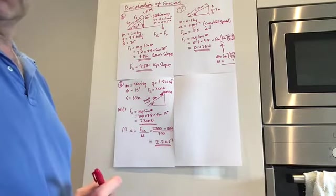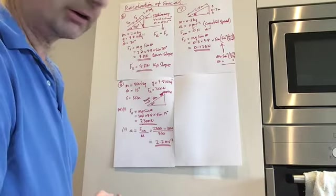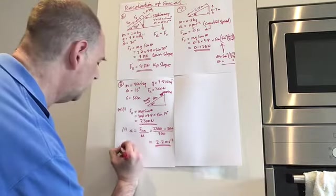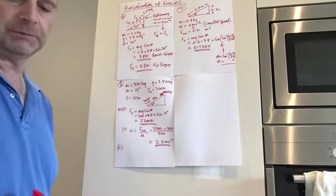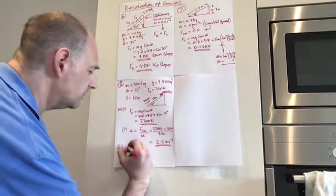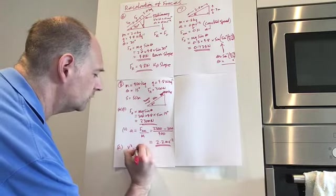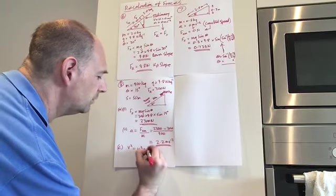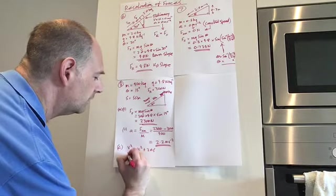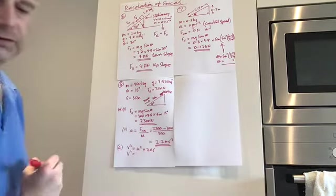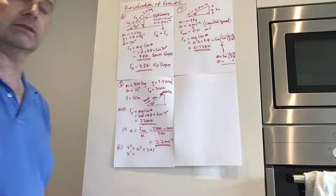Anyway, part C. What was the speed of the car by the time it hit the hedge at the bottom of the slope? That's where we're going to use equations of motion. V squared equals U squared plus 2AS. V squared equals, well, it started from rest because the brakes failed.